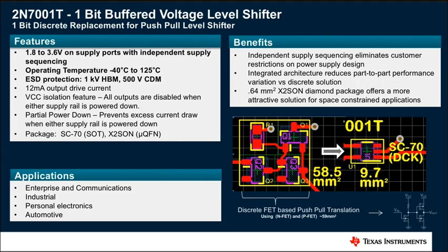To help address the market demand for simple unidirectional push-pull IO level shifting, Texas Instruments is introducing the 2N7001T. The device was developed to help system designers implement simple unidirectional level shifting solutions from 1.8 volt to 3.3 volt, where historically discrete level shifting implementations may have been used.